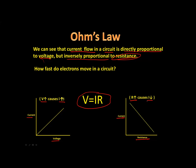Electrons actually move quite slowly — only about one meter per hour. The reason everything in the circuit is energized the instant you flip that switch is because the potential difference, that voltage, that electrical force, causes all of the electrons in the circuit to begin moving at exactly the same time. So that's our lesson on Ohm's law.